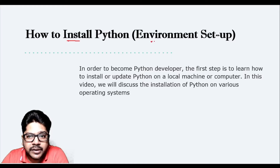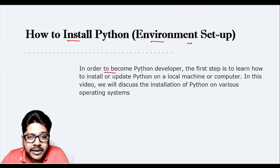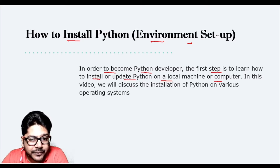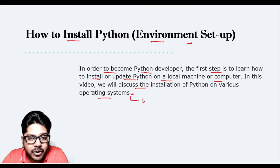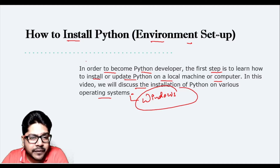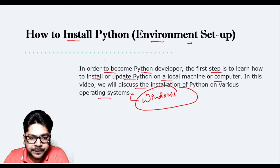The first step is how to install Python and set up the environment. In order to become a Python developer, you need to learn how to install or update Python on your local machine. In this video we'll discuss installation on various operating systems, though I'll be focusing more on Windows since that's what I'm using, and I've taken screenshots while installing it on my machine.